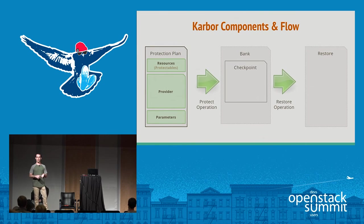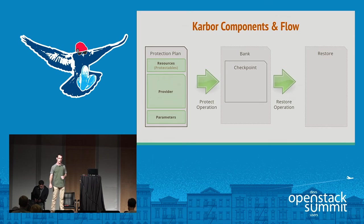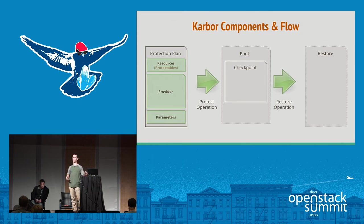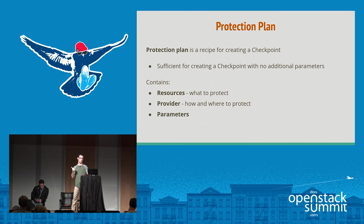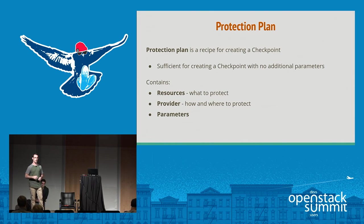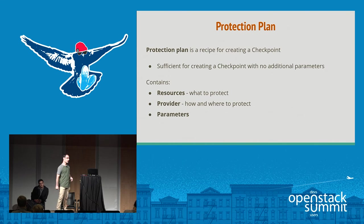The protection plan is a recipe for creating a checkpoint — it holds all the information sufficient for performing a restore. It consists of: resources you want to protect, a provider which dictates how to protect them, and parameters such as specific network configuration. Resources are obtained by querying protectable types, so if you write a new plugin for protecting a new type of resource, Karbor can discover those resources, add them to a protection plan, and create a checkpoint containing that new resource's data.